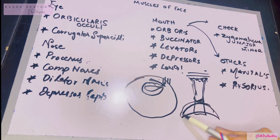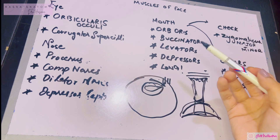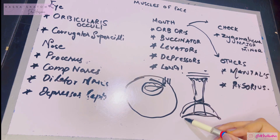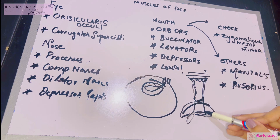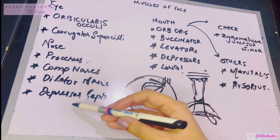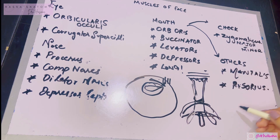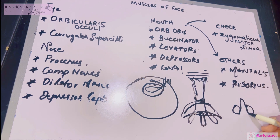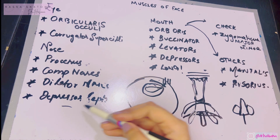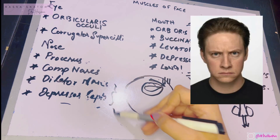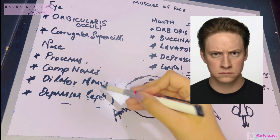The dilator nares goes from below and attaches to dilate the nasal openings. The depressor septi is attached to the septum of the nose — the septum is the dividing wall between the two nostrils. As the name says, the depressor septi depresses the nasal septum. Depression of the nasal septum and dilation of the nares typically occur during an angry expression, so these two muscles are used when you're angry.